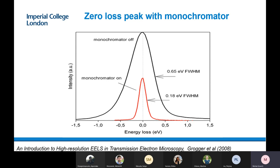There is a defined width for the peak which defines our resolution. We have an instrument on the Titan called a monochromator, which is basically a filter that filters out electrons at different energies at the very top of the column, when the electrons are produced. By using the monochromator, we can reduce the width of the peak, thereby increasing the resolution of our system. However, we are losing some electrons in the process, so the peaks will be less intense and the intensity of our spectra will be reduced.